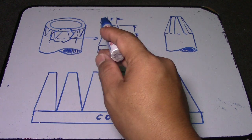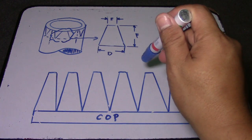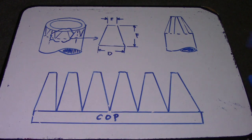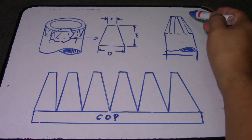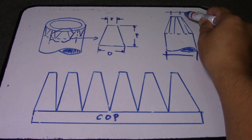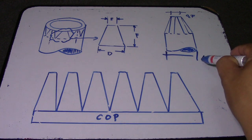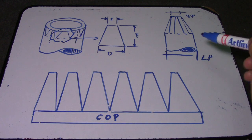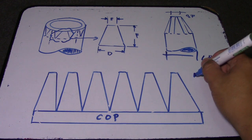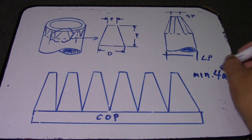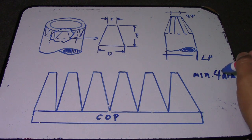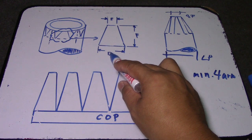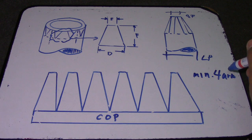To get the circumference of the pipe: 3.1416 times the diameter. That is how to get the circumference of the pipe. Our large pipe is this one and the small pipe is this one. So circumference of the large pipe divided by four — that is our minimum number of arms — gives us letter D.